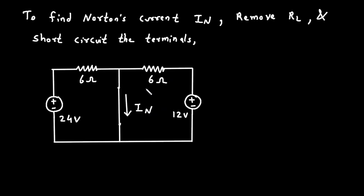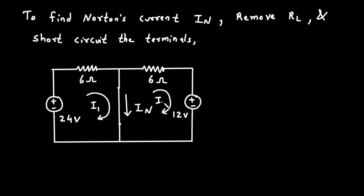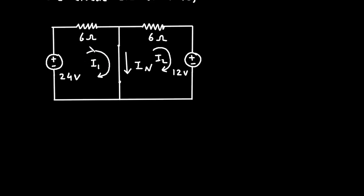We will short circuit these terminals and now this will be our Norton's current, and it will be current IN. Remember that the direction of this current will be downward. Now let's find the value of Norton's current. We'll use mesh analysis. Let's apply KVL to mesh number 1.